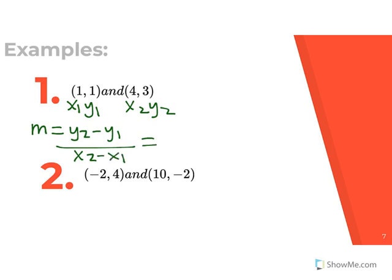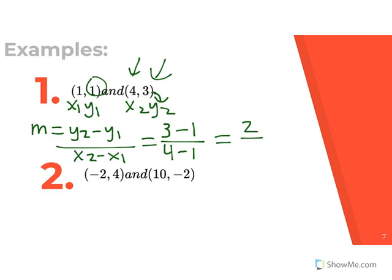I labeled 3 as y2, so 3 goes first. Then y1 was 1, so minus 1. Since I started from that set of points, I go back to those same points for the denominator: x2 minus x1, which gives 4 minus 1. So we have 3 minus 1 equals 2, and 4 minus 1 equals 3. The last step is to simplify — I can't simplify 2 thirds, so my slope is 2 thirds.